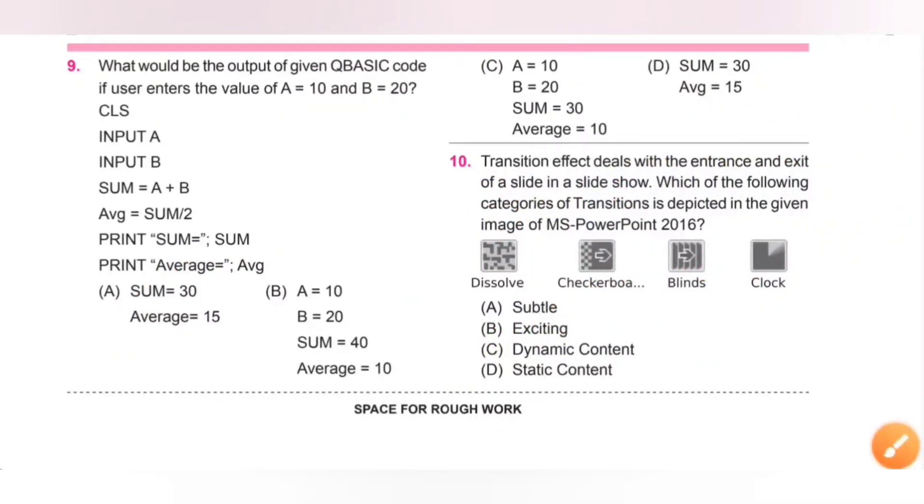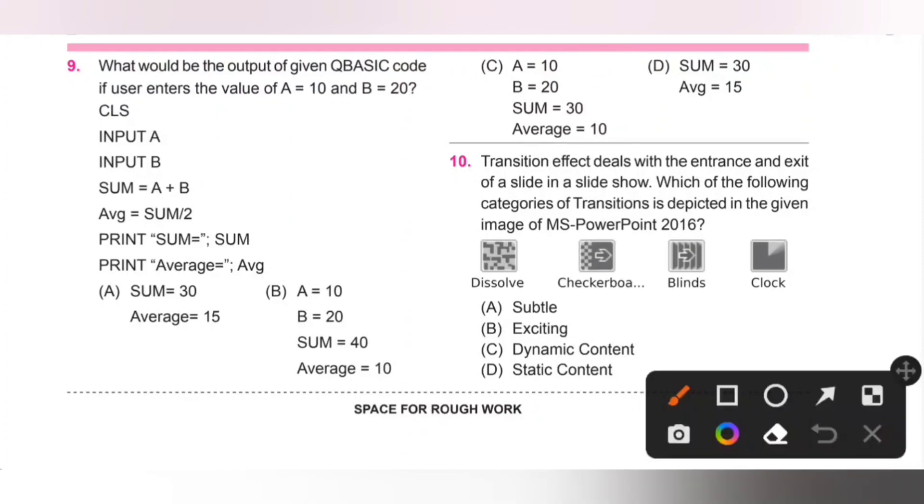Tenth one: Transition effect deals with the entrance and exit of a slide in a slideshow. Which of the following categories of transition is depicted in the given image of MS PowerPoint 2016? First transition dissolve, second one checkerboard, third blinds, and then clock. A: Subtle, B: Exciting, C: Dynamic content, D: Static content. Option B is the correct answer.